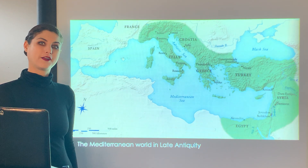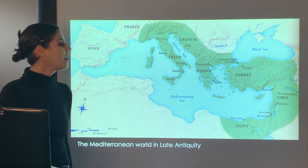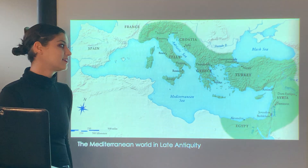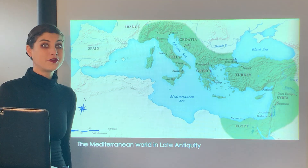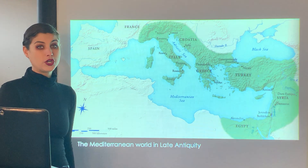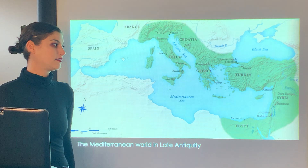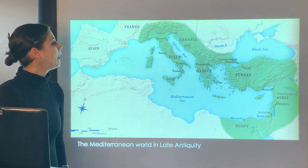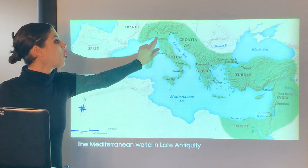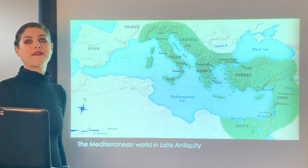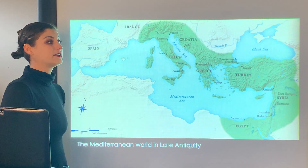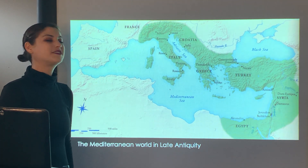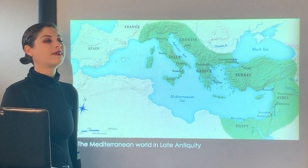Welcome to Late Antiquity and Early Christian Art. Today we're going to be looking at examples of early basilicas, mosaic wall designs, and illuminated manuscripts from the Christian world. We'll also look at examples of synagogues from Judaism in places like Dura-Europos in Syria, and focus on Christian architecture in Rome and Ravenna. We'll continue learning about Constantinople as the capital of Christendom in the East.